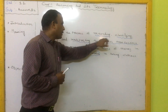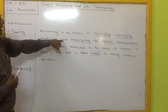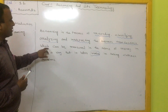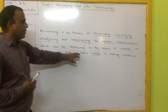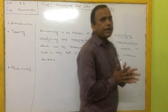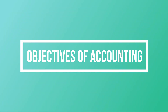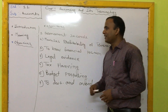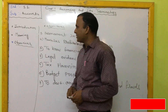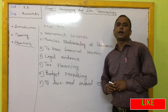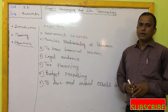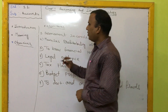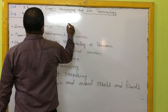So that is the definition of accounting: Accounting is a process of recording, classifying, analyzing, and interpreting business transactions which can be measured in terms of money, in such a way that it helps the user in taking a correct economic decision. After introduction and meaning, the second concept is the objectives of accounting — that means the goals, or why we prepare our accounting books.